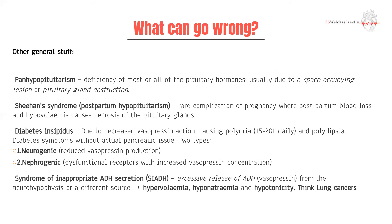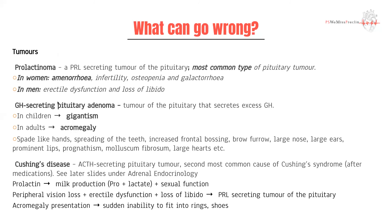Other general topics relevant to know: first is panhypopituitarism, where you have a reduction in the production of all pituitary hormones. This is usually due to space-occupying lesions. A pituitary adenoma can compress the rest of the pituitary and cause pituitary hypofunction — a benign non-secreting tumor that simply compresses surrounding pituitary tissue, resulting in low levels of all pituitary hormones.